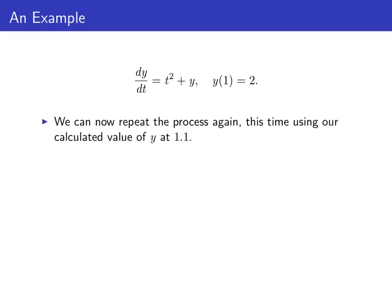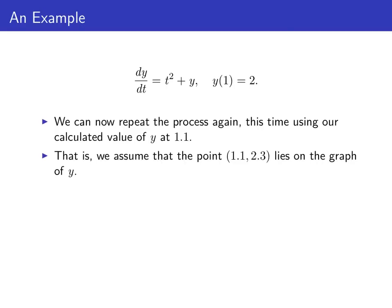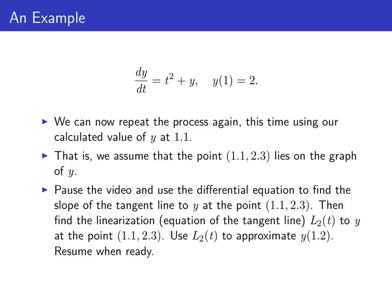We can apply this process again, this time using our calculated value of y at 1.1. Even though the point (1.1, 2.3) probably doesn't lie exactly on the graph of our solution, it's close, so we're going to assume that it does. Pause the video and use the differential equation to find the slope of the tangent line to y at the point (1.1, 2.3). Then find the linearization L₂ to y at that point, and use it to approximate y(1.2). Resume the video when you're ready.